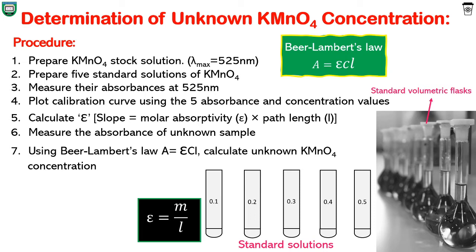Potassium permanganate or KMnO₄ lambda max is 525 nanometers — that is, in the KMnO₄ absorption spectra, there is a peak at 525 nanometers. This is where the compound absorbs at its maximum, which is called lambda max. Now record the absorbance of the standard solutions one by one at 525 nanometers using the UV visible spectrophotometer.